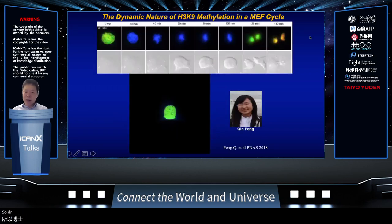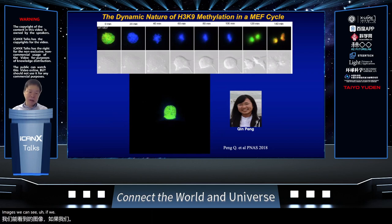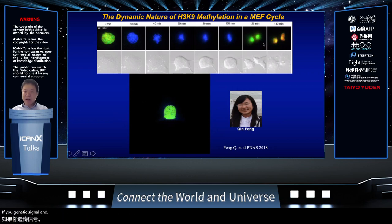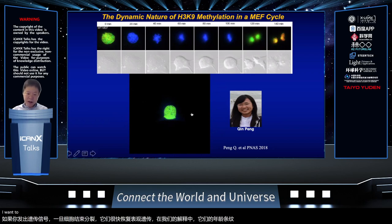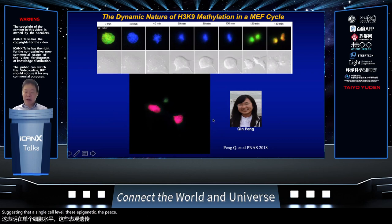Dr. Qingpeng, who has since started her own lab at Shenzhen Bay Laboratory, invented this technology and allowed us to visualize at the single-cell level how H3K9 trimethylation is modified. On the top panel of images, looking from left to right: the left shows interphase with a hot color indicating high H3K9 trimethylation. When the cell goes through mitosis, there is a quench and reduction of these epigenetic signals. As soon as the cell finishes division, it quickly recovers H3K9 trimethylation — suggesting that at the single-cell level, this epigenetic histone modification is precisely controlled.